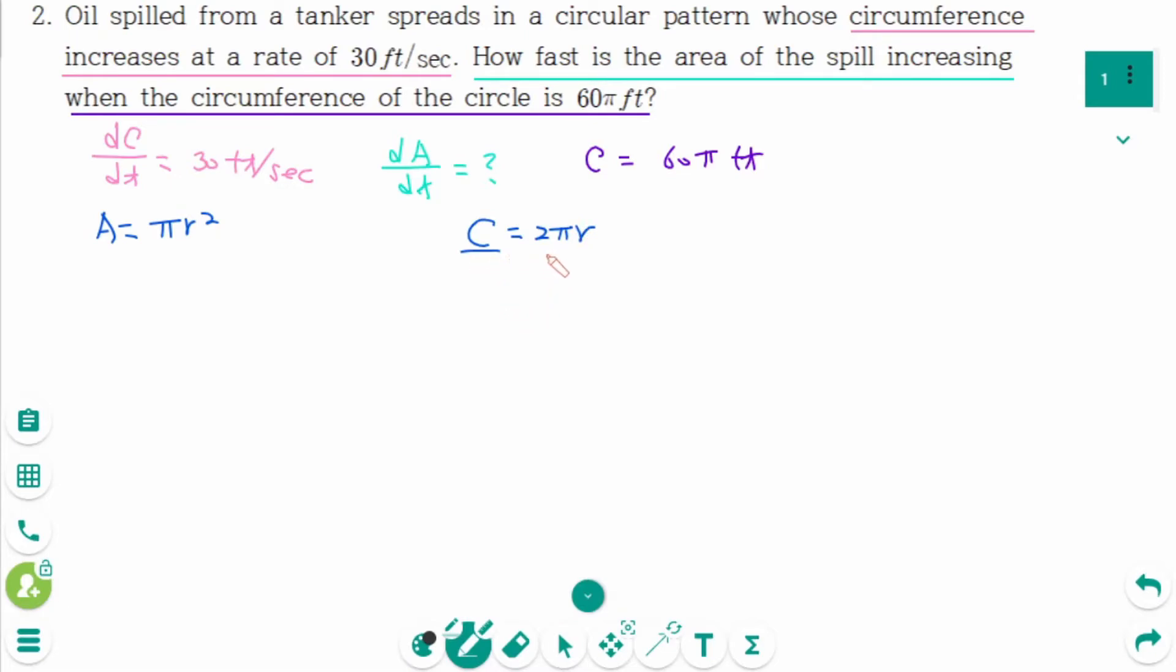Then divide by 2 pi on each side. We can rewrite as C over 2 pi equals r. Then plug this into A: pi times (C over 2 pi) squared equals pi times C squared over 4 pi squared, which simplifies to C squared over 4 pi.